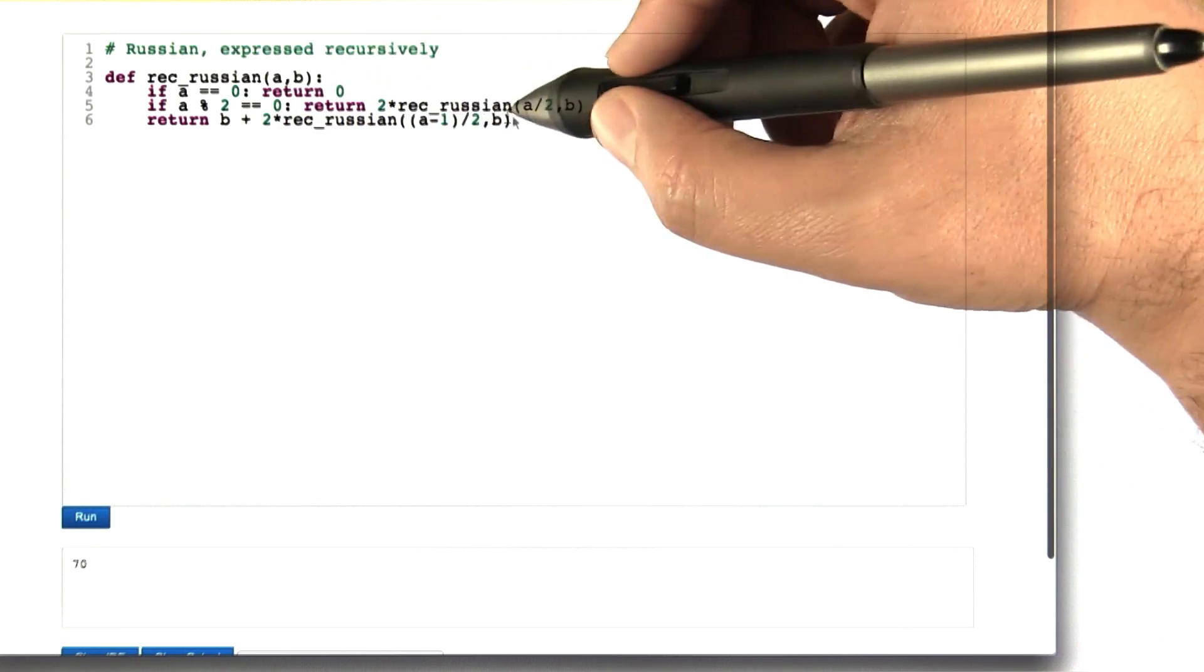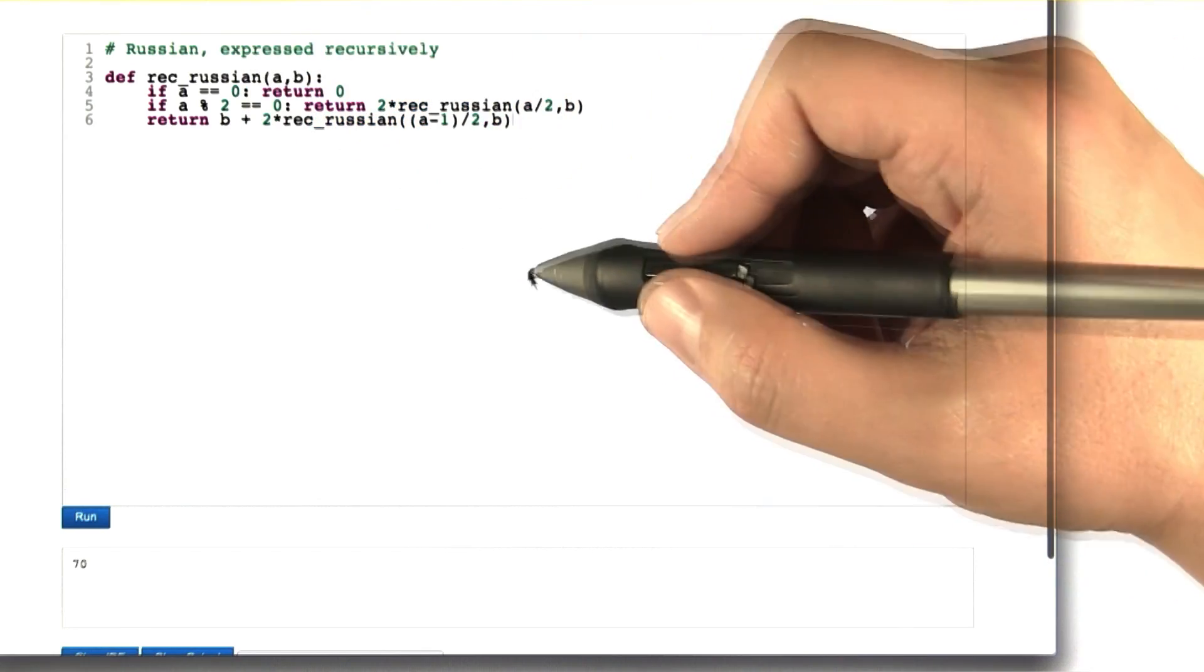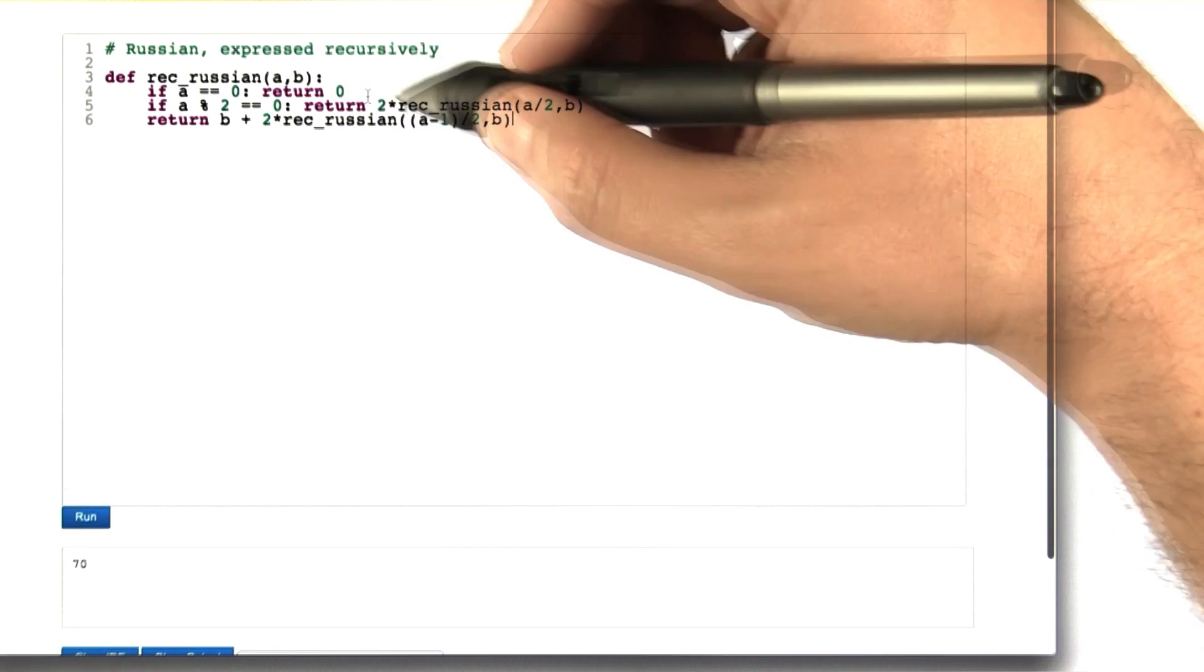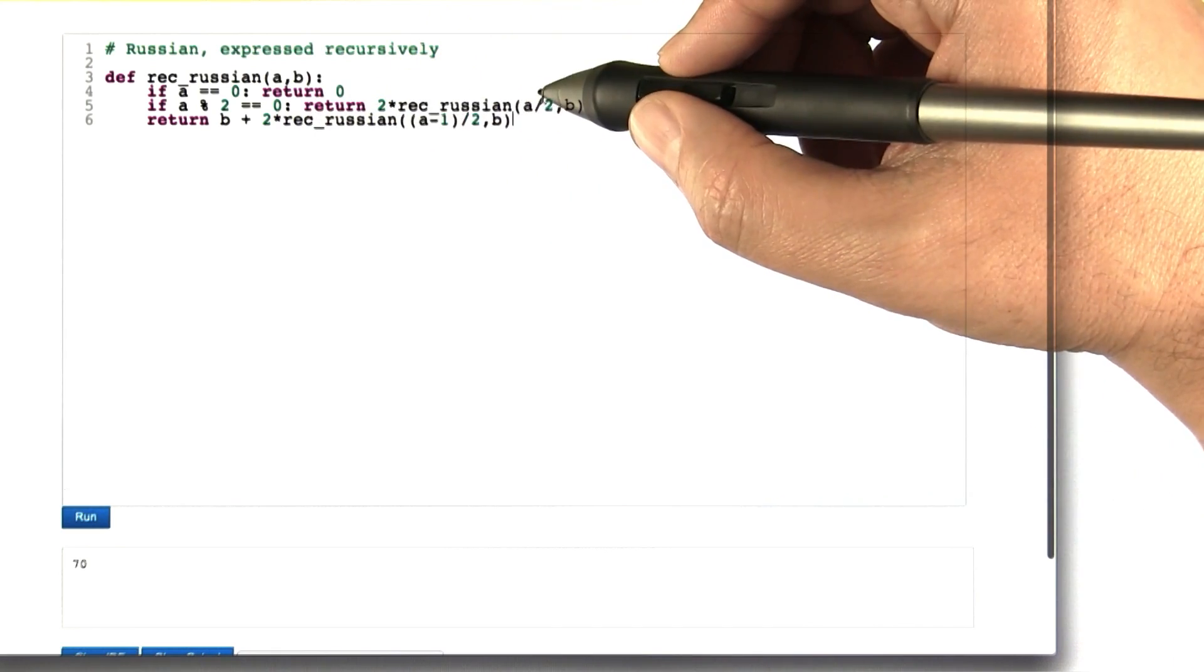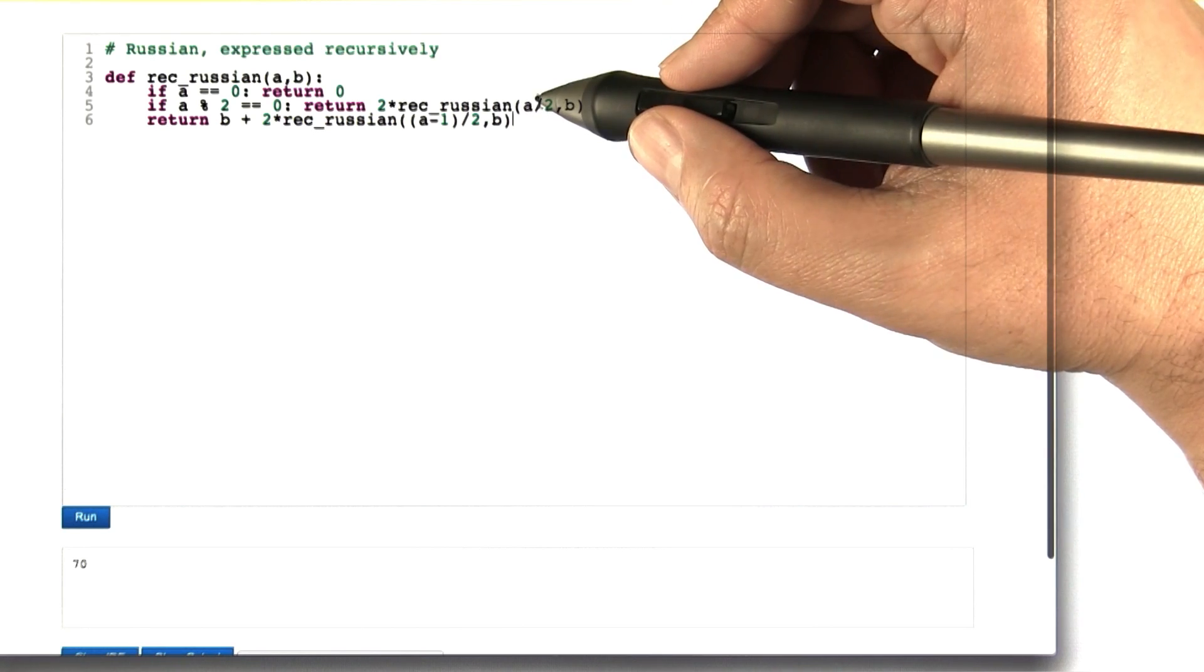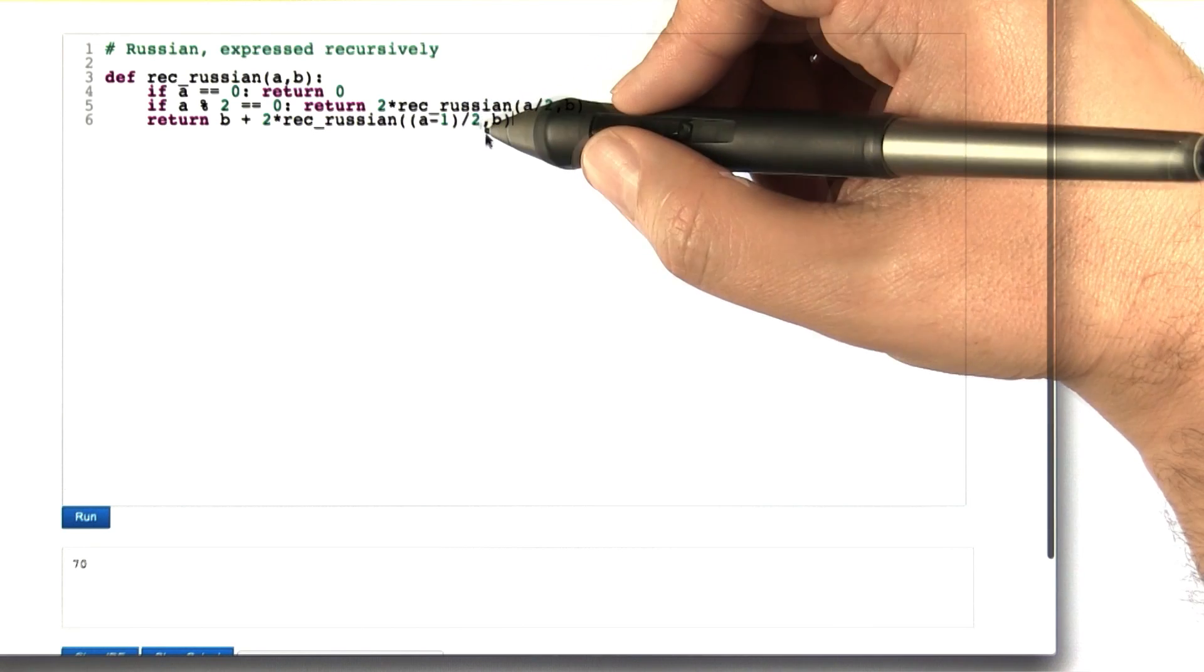So using the solution to this subproblem, we can compute the solution to the original problem. So this maybe seems a little bit circular, but each time that the Russian peasant algorithm is being called here, it's being called with a much smaller value of a, half as big as it was before, and that's where we're getting a lot of our mileage from.